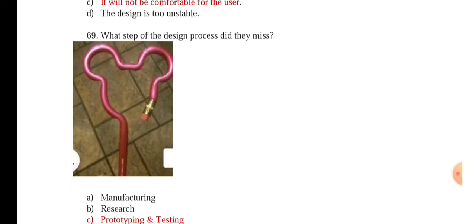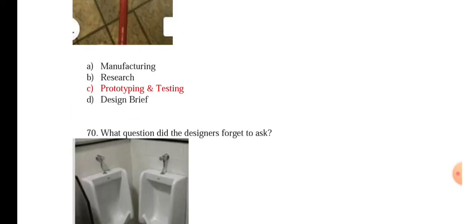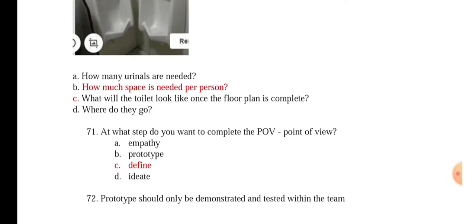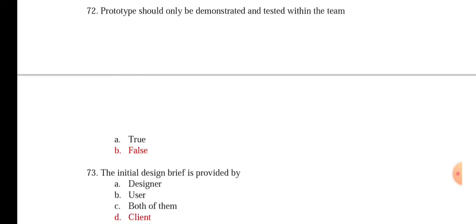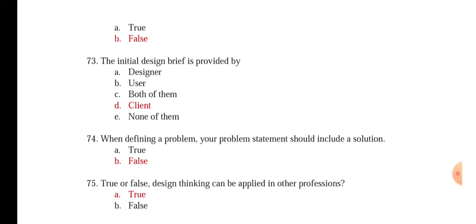What step of design thinking process did they miss here? In this picture you can see prototyping and testing is missed. What question did the designers forget to ask here? How much space is needed for a person to stand? At what step do you want to complete the POV, point of view? Define. Prototype should only be demonstrated and tested within the team. It is false. The initial design brief is provided by client.